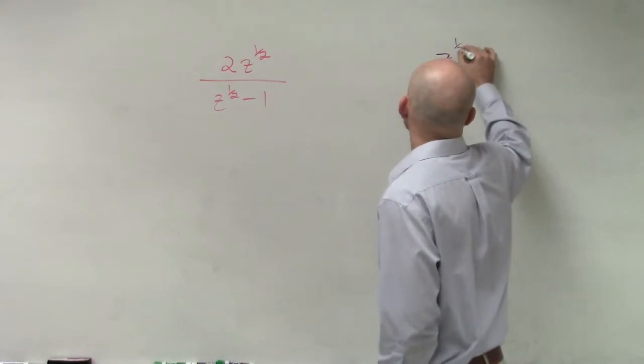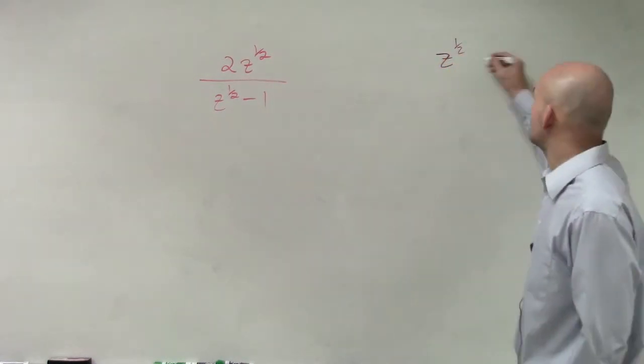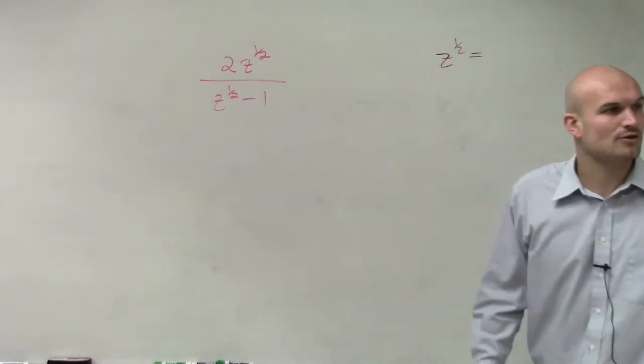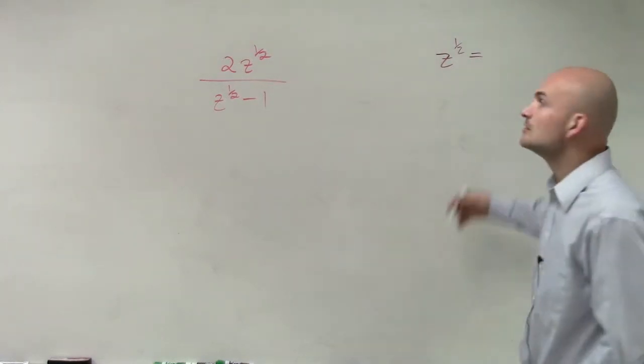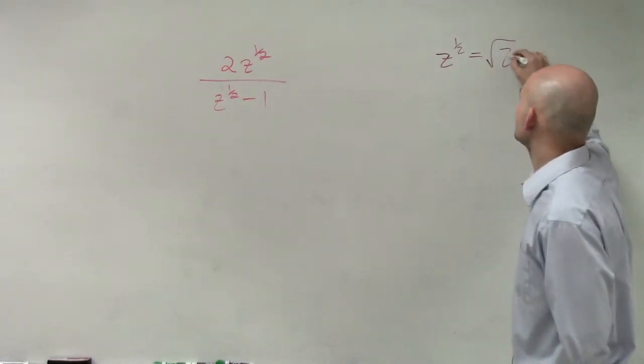Ladies and gentlemen, does anybody know z to the 1 half, that is equivalent to as a radical form what? With the square root of z, right?